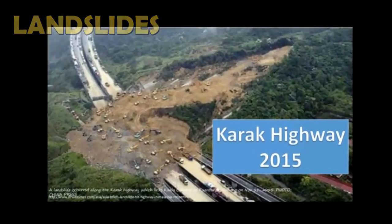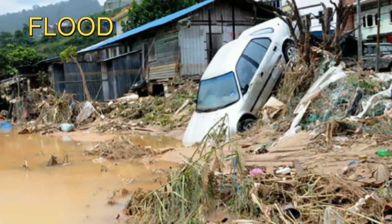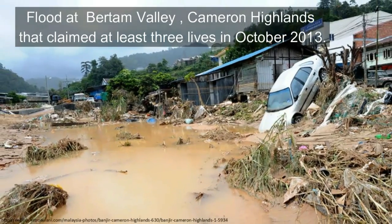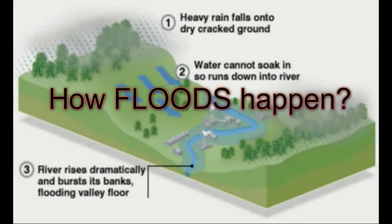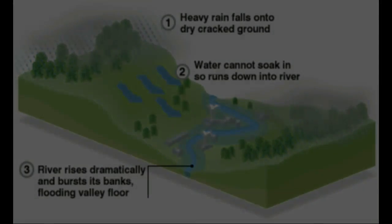The third effect of deforestation is landslides. These are examples of landslides that have happened in Malaysia. The fourth effect of deforestation is flood. The flood that occurred at Batam Valley, Cameron Highland, claimed at least three lives in October 2013. How does flooding happen? Heavy rain falls onto dry cracked ground when there is no leaf to reduce the impact of raindrops on soil, causing soil erosion, and no roots to absorb water from soil and reduce the movement of sediment into the river. Water runs down into the river directly, the river rises dramatically and bursts its bank, and flood occurs.